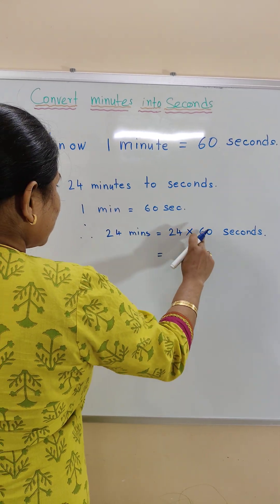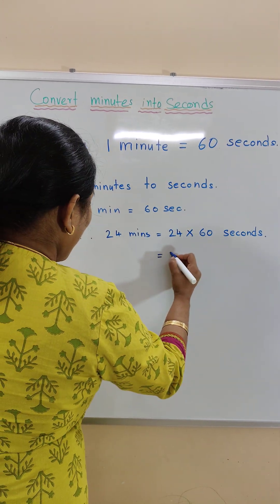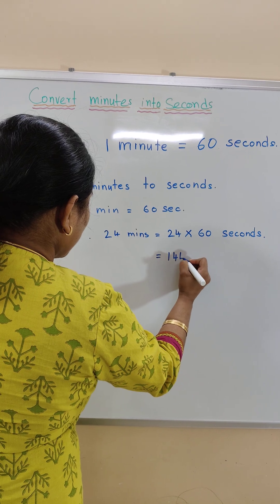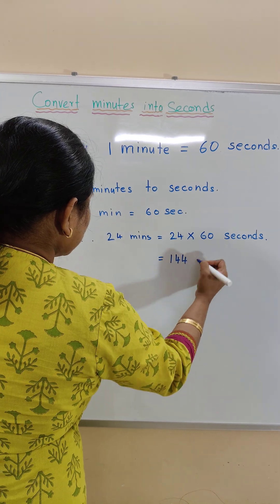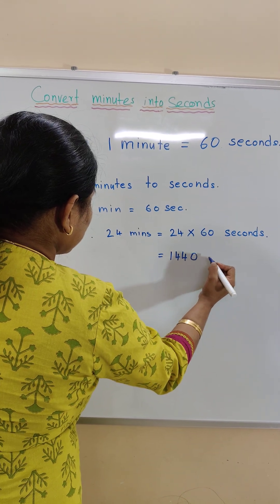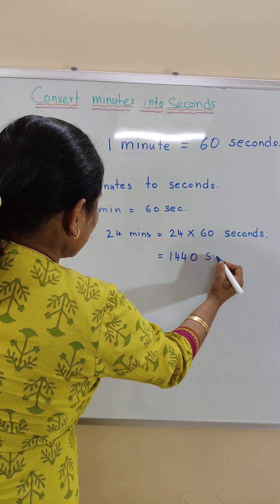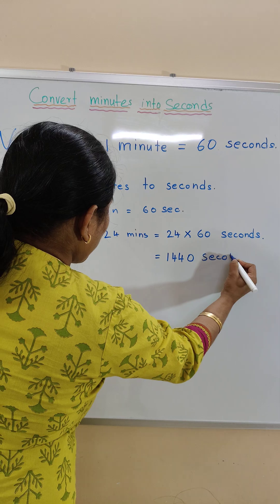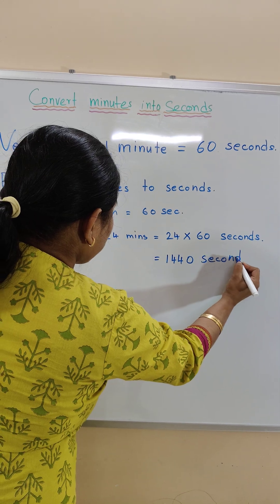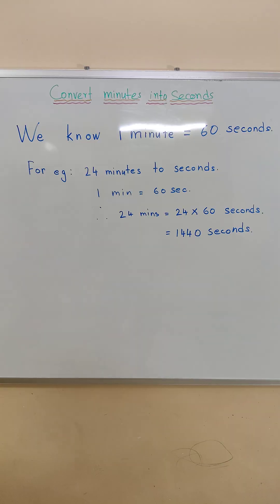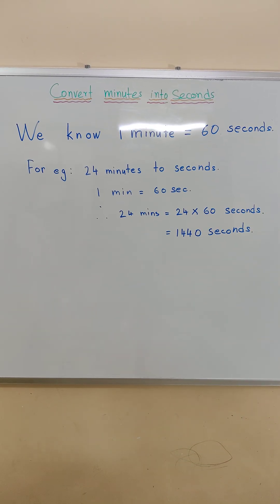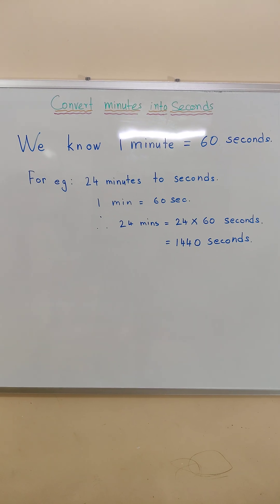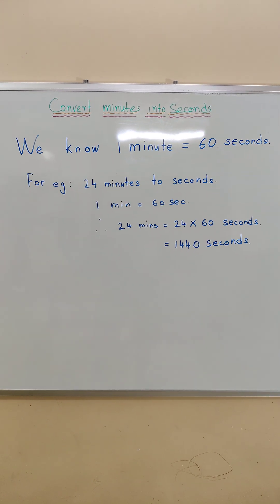So, 24 times 6 is 144, and the zero comes down. Therefore, 24 minutes is equal to 1440 seconds.